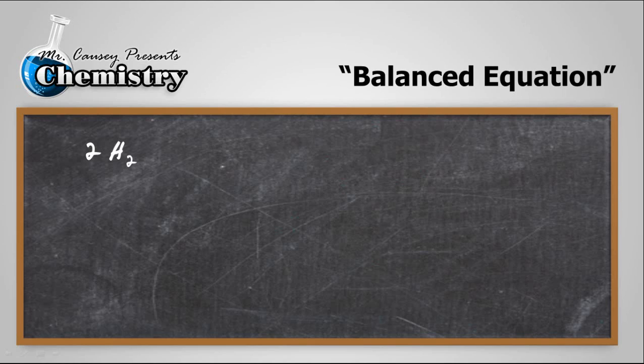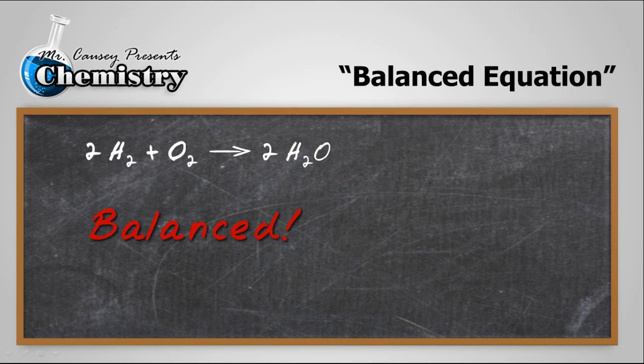First our balanced equation. So two moles of hydrogen plus one mole of oxygen will give us two moles of water and you can check that out. It's perfectly balanced and remember that hydrogen and oxygen are both diatomic.